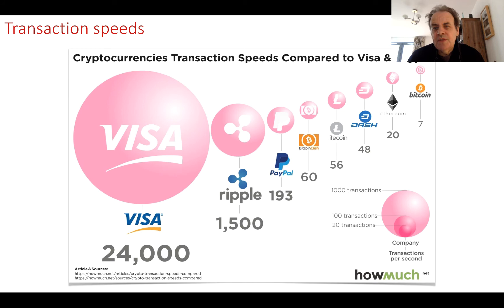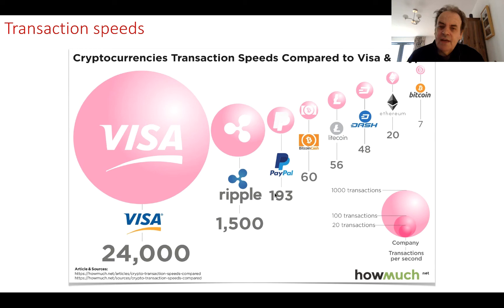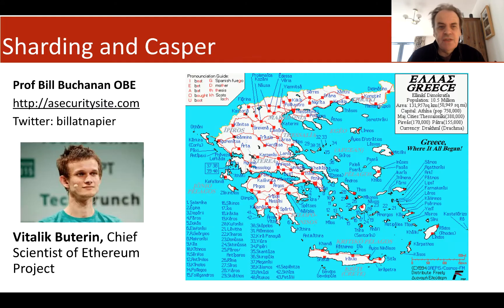If Ethereum and Bitcoin are to achieve the same rates as something like Visa, they will have to speed up their transaction speeds. Ethereum lags behind Visa and PayPal because of the limits on the number of transactions that can be processed at any given time. The two methods now being introduced into Ethereum — Sharding and Casper — will hopefully overcome the problem of limiting transaction speeds and move away from proof of work as the main consensus method.